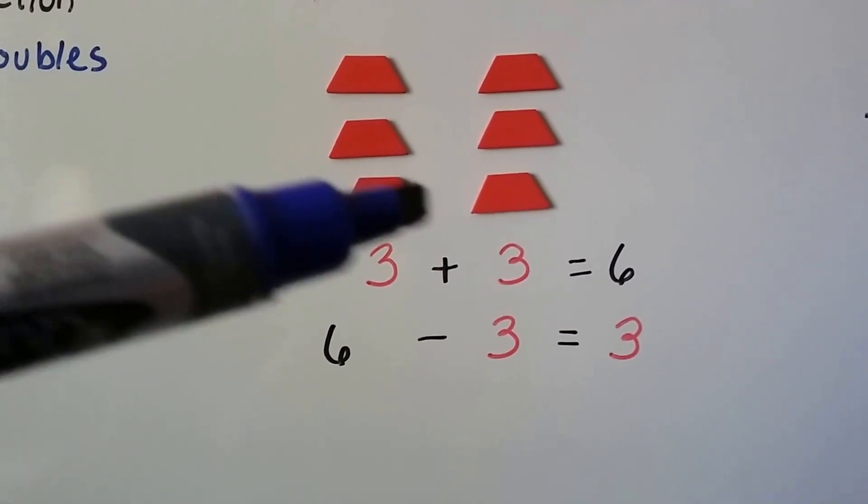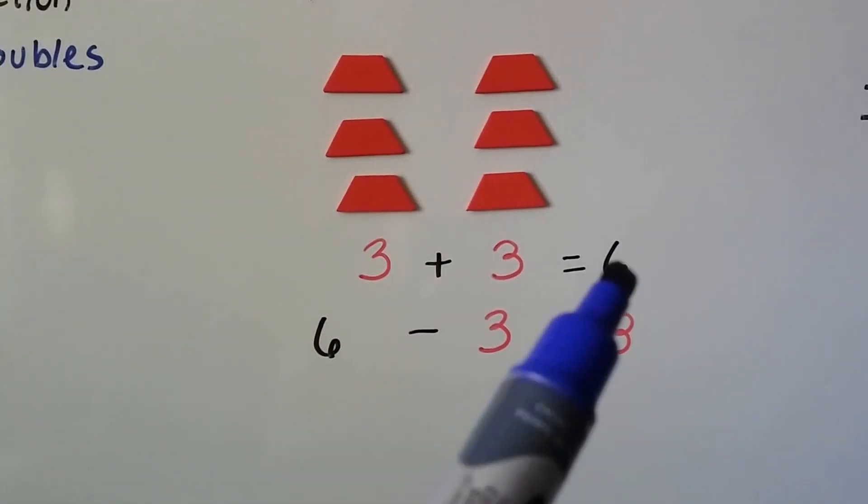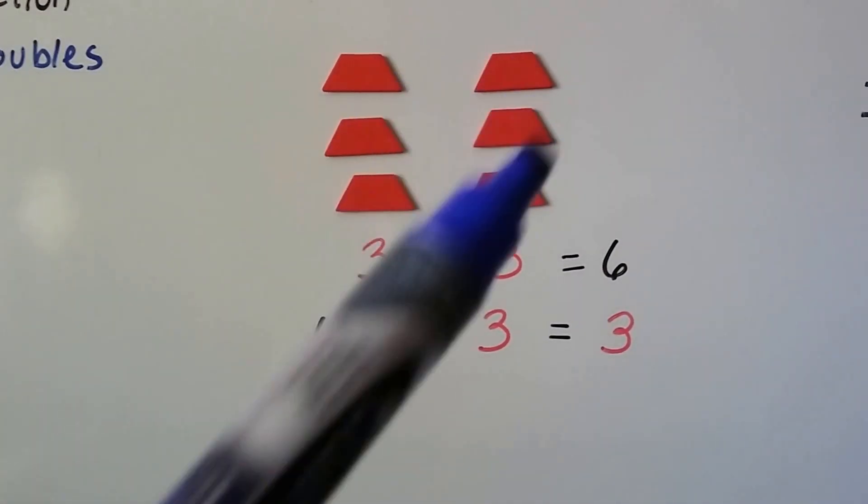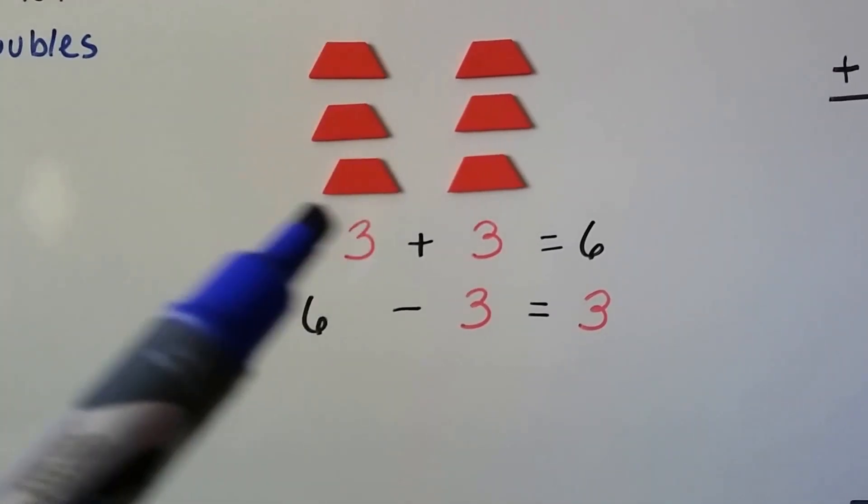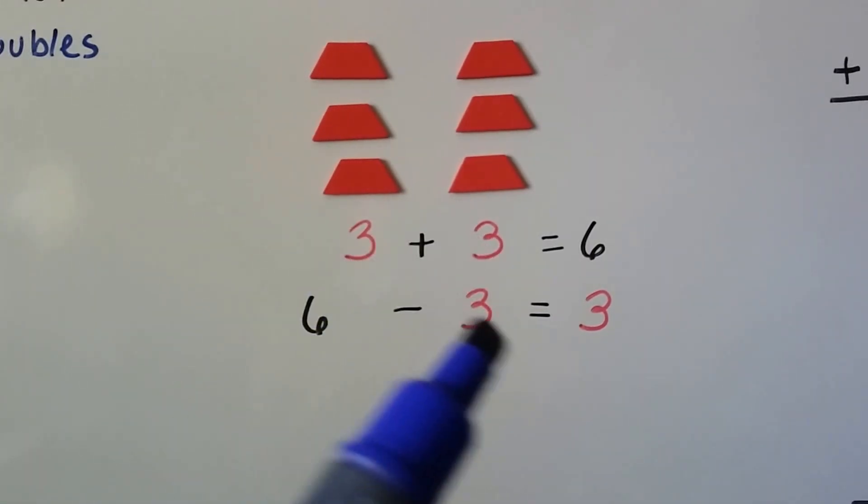3 plus 3 equals 6, and 6 minus 3 equals 3. We can see the doubles.